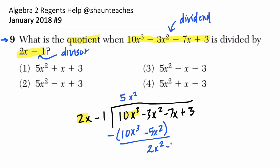Then I'm going to bring down my -7x and repeat the process. How many times does 2x go into 2x²? 2 divided by 2 is 1, and x² divided by x is just x. Multiply the x by the divisor and see what's left over. We get x times 2x is 2x², and x times -1 is -x.